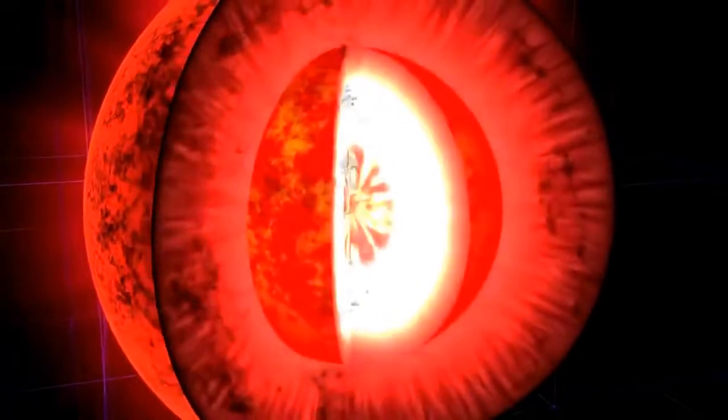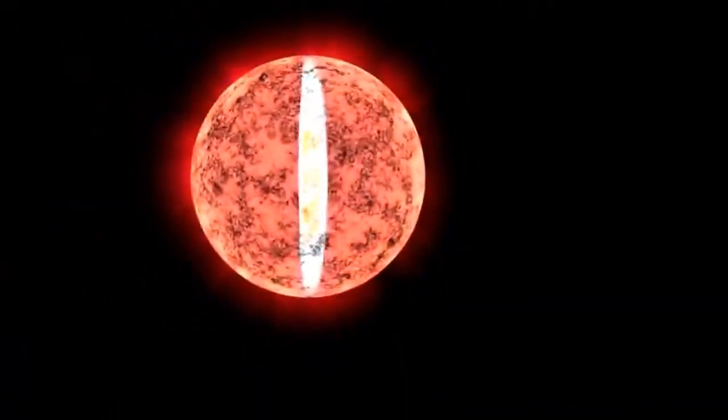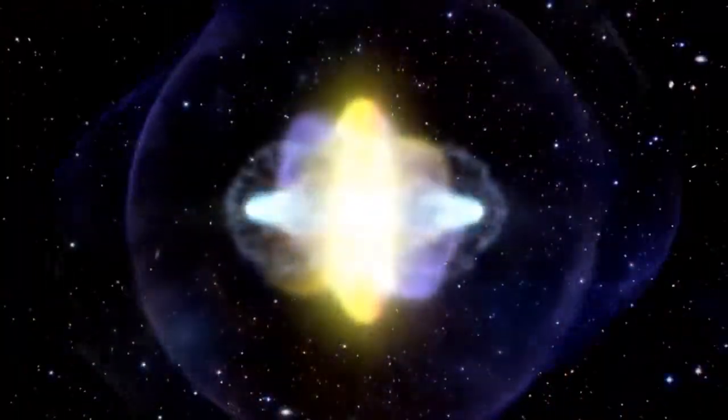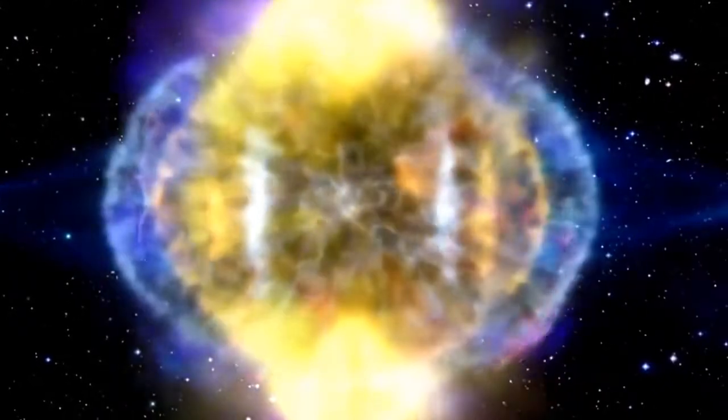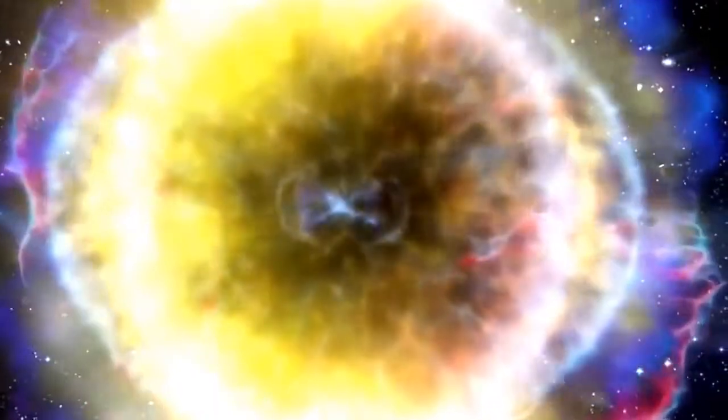When enough iron accumulates in the core of the star, it begins to collapse of its own weight. That can send a shock wave racing outward that literally blows the star apart in a supernova. At the moment the star dies, if enough matter falls into its core, it can collapse to a point, forming a black hole.